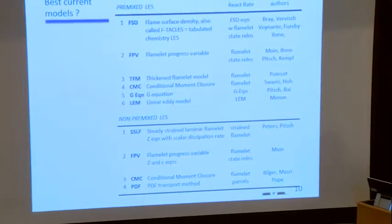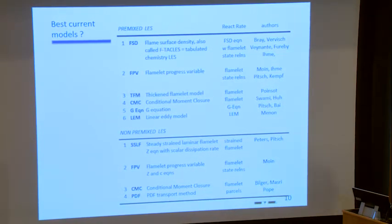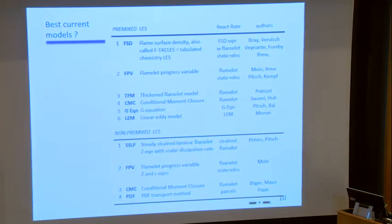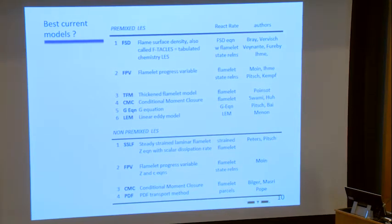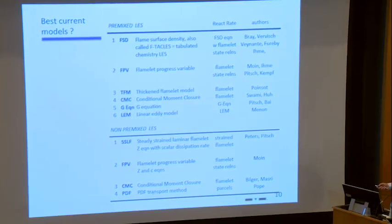For non-premixed flames, the steady strain laminar flamelit model is kind of like the basic model. You assume that a non-premixed flame, a jet flame, is a collection of very thin laminar non-premixed flames, laminar flames, which can be strained and made thinner or thicker by the velocity field. And we use the scalar dissipation rate as a second variable. And so you have to solve for the flamelit properties as well as the scalar dissipation rate, which is a strain parameter. And if you can solve those two equations, you can get a nice result.